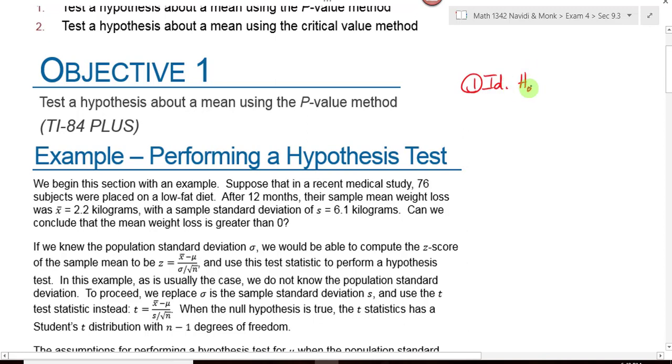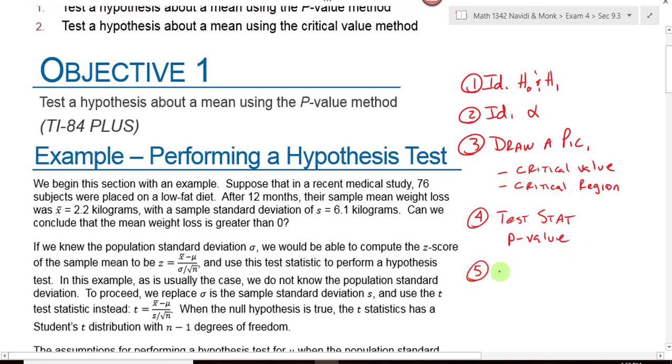We still want to use those same six steps though. Identify the null and the alternative hypothesis. Identify your alpha level. Draw a picture to model the situation. In that picture, you want to list your critical value. We'll come back later and add our test statistic to it and shade your critical region. Then you want to find your test statistic and your p-value from the calculator. Then you make a decision and write your conclusion.